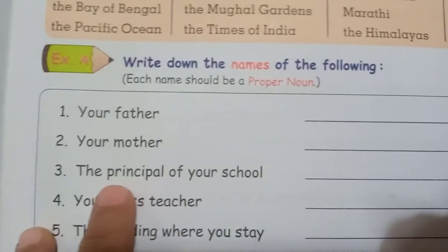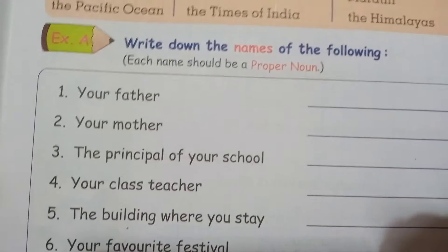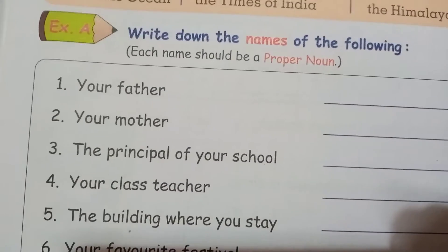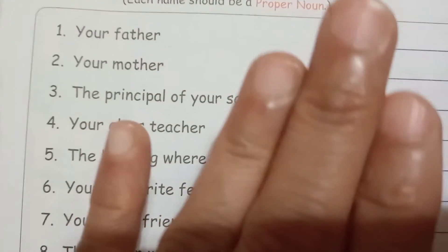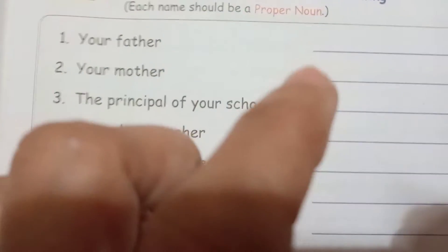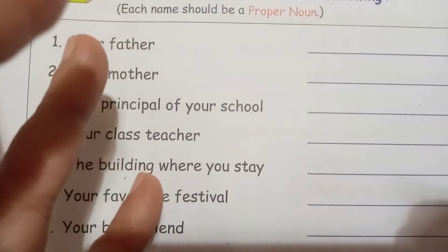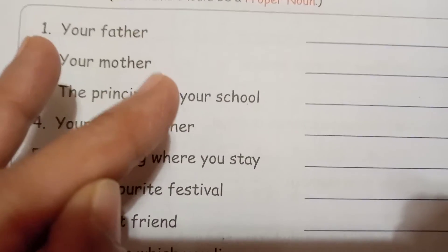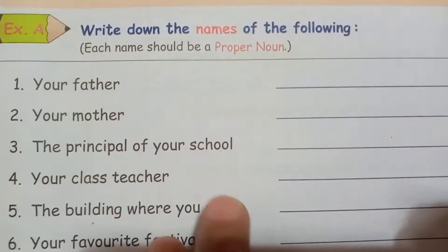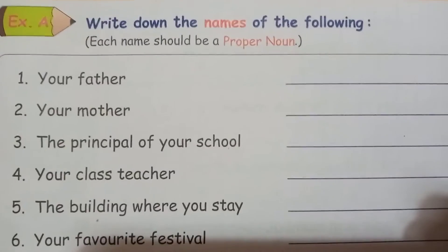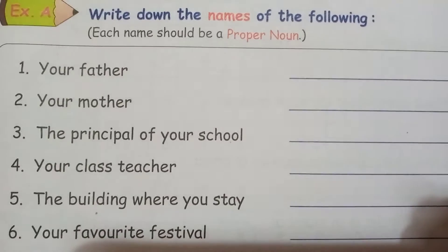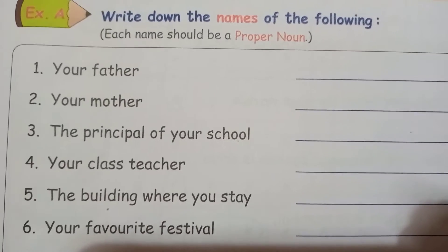Write down the names. An assignment will be given to you — you have to identify proper nouns in the sentences. The name mentioned should be a proper noun. You have to understand the name of a person, name of a thing, name of an animal, name of a place. Whatever words or sentences will be given to you as an assignment, they should be identified as proper nouns.